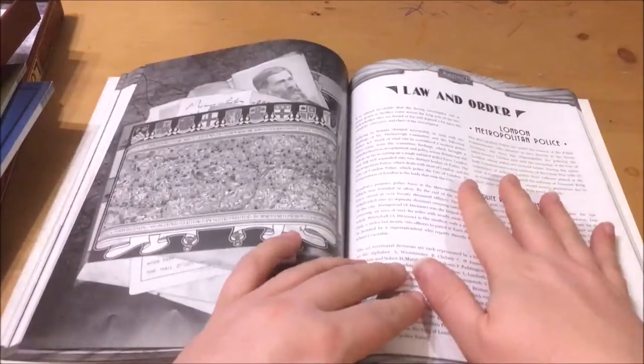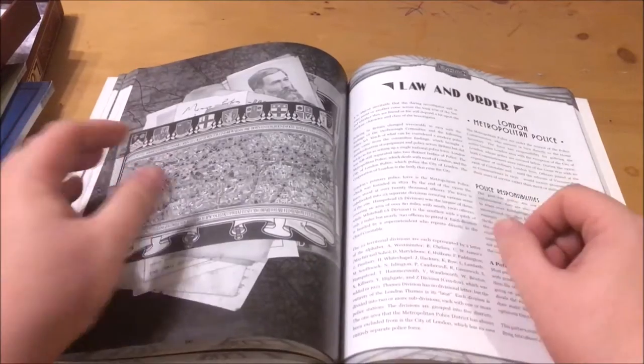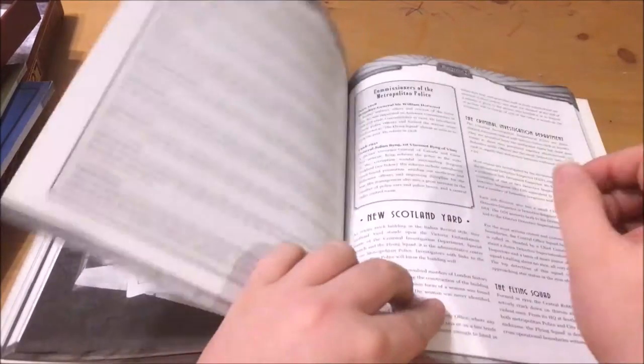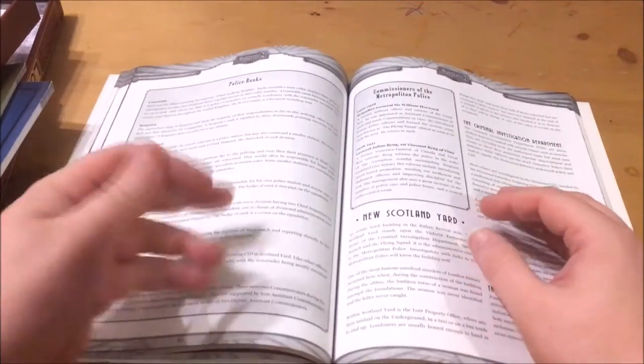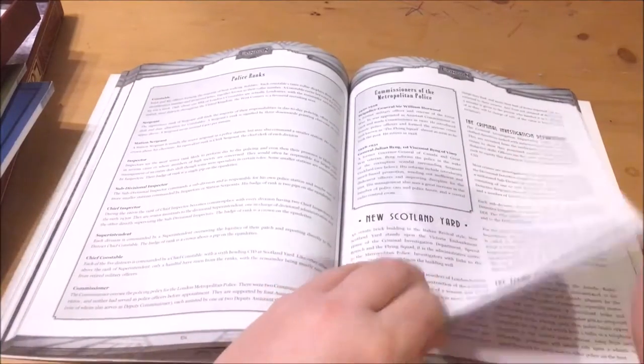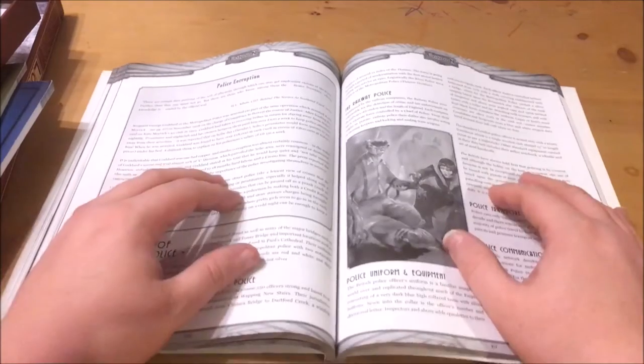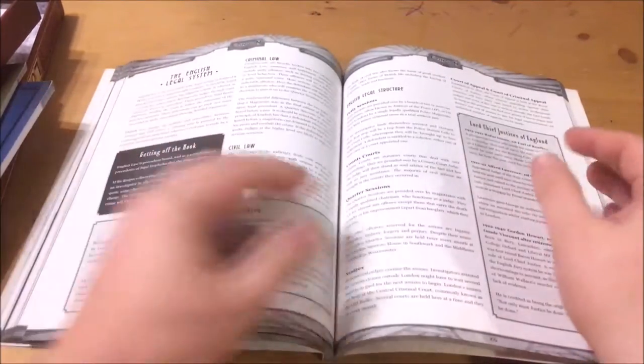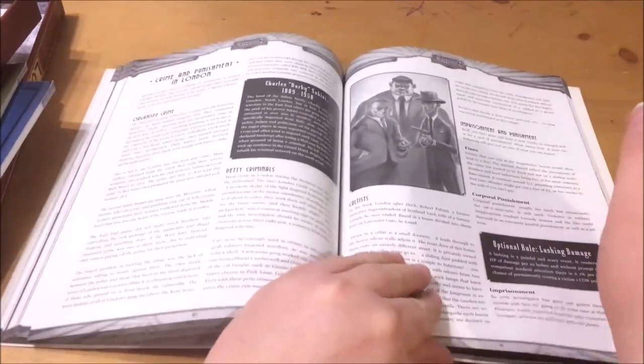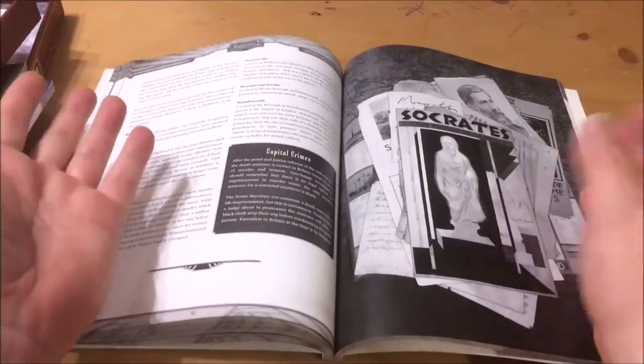The following chapter is Law and Order. This chapter covers the London Police Force and gives a handy guide to the various ranks. Scotland Yard is covered including the various departments like the CID and the Flying Squad. We have information on police corruption at the time and also the City of London Police who are a separate entity to the Metropolitan Force. We have a brief discussion on the English legal system and on crime in London.